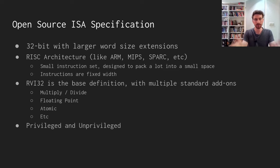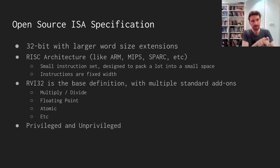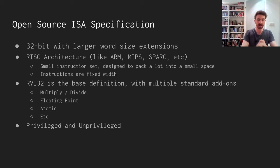There are many architectures that are RISC out there — things like ARM, which is a set of RISC architectures, MIPS, SPARC, and others. RV32I is the base definition — that's the integer 32-bit RISC-V instruction set.